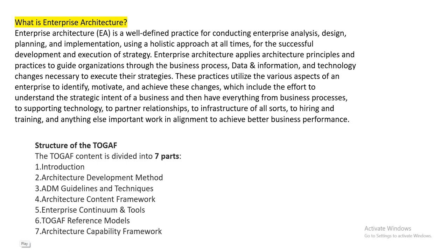The structure of TOGAF: TOGAF context has seven parts. One is introduction; second is architecture development method, we can say ADM; third is ADM guidelines and techniques; fourth is architecture content framework; fifth is enterprise continuum and tools; sixth is TOGAF reference models; and seventh is architecture capability framework.